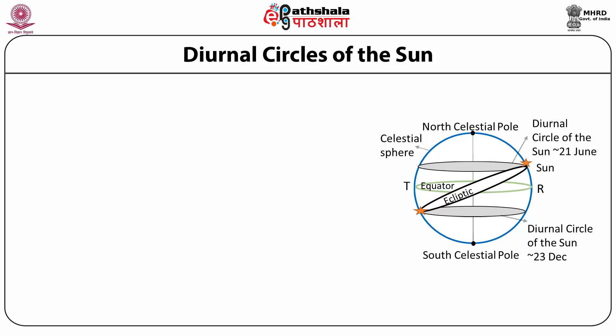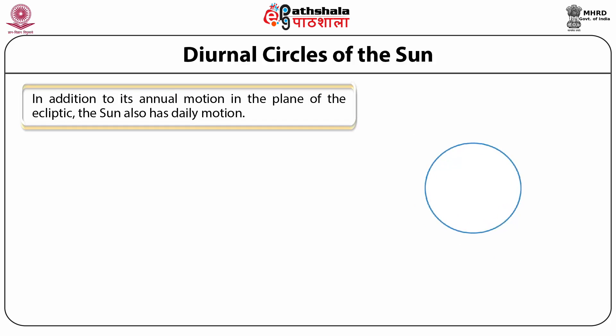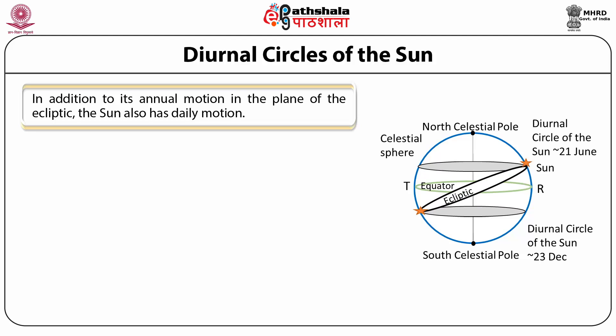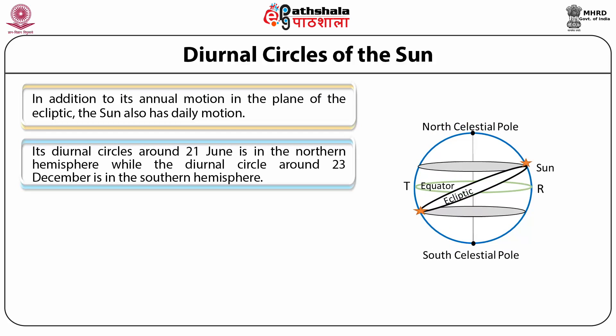The revolution of the moon around the earth approximately makes a month. We have seen in the previous module that the sun has a daily motion because of which it rises and sets. This daily motion is called the diurnal motion and the path followed is called the diurnal circle. The sun also has an annual motion and the path followed by the sun during its annual motion is called the ecliptic. In this picture, the celestial sphere, the equator and the ecliptic are shown. The diurnal circles of the sun on 21st June and 23rd December are also shown.